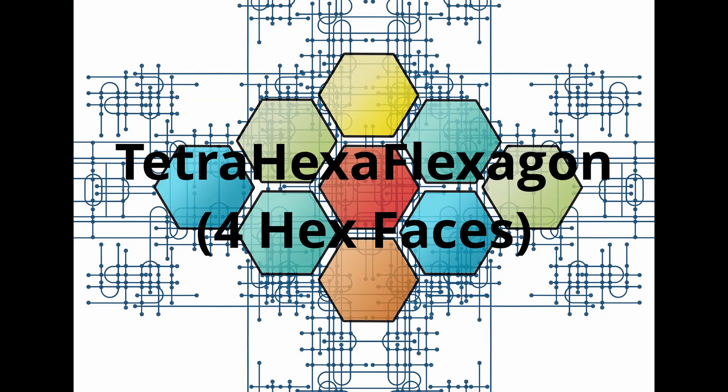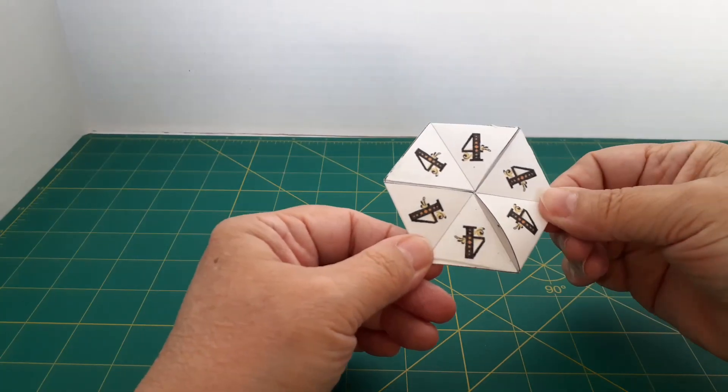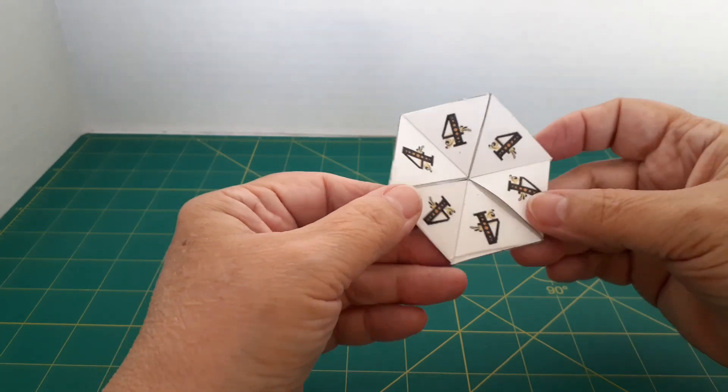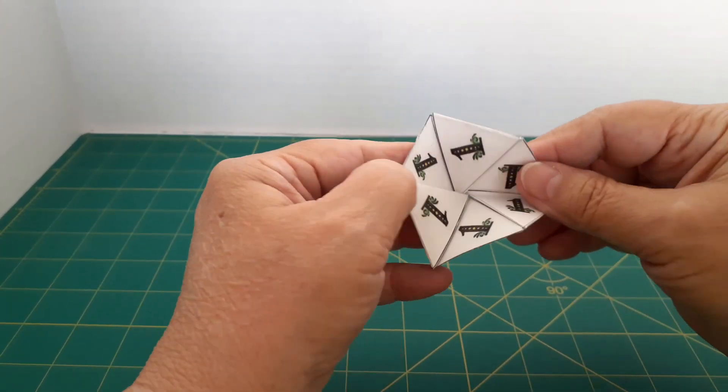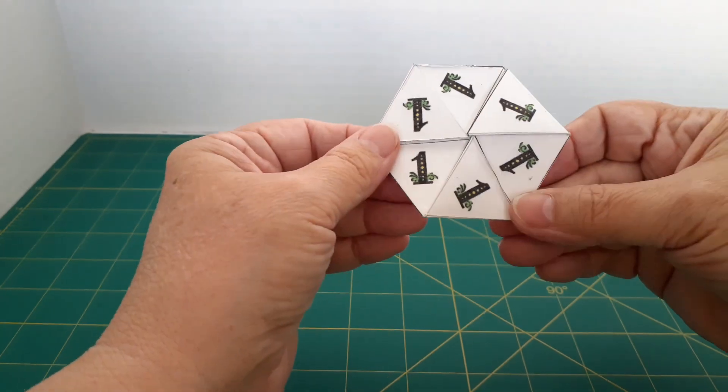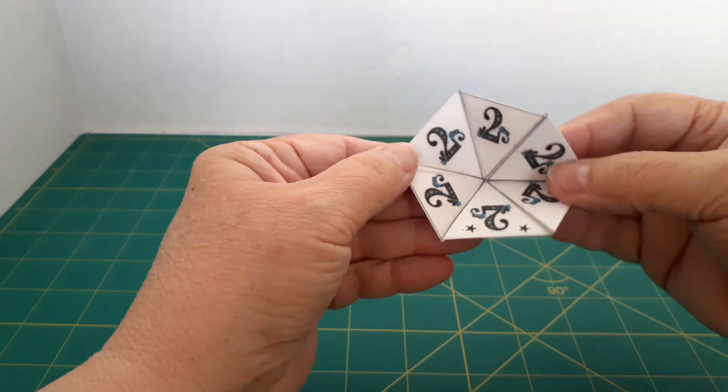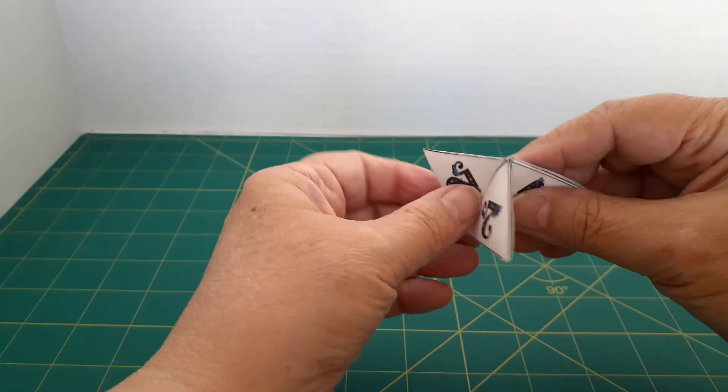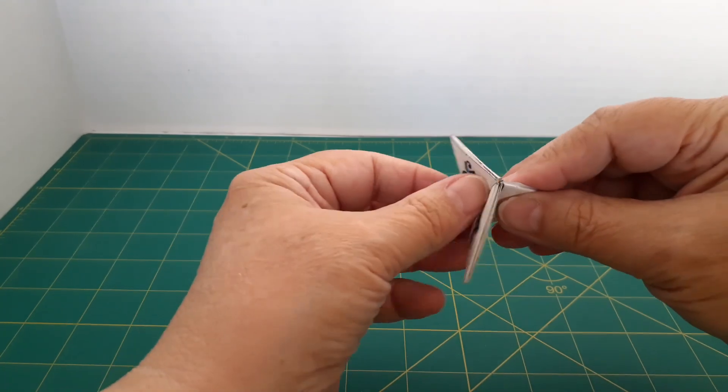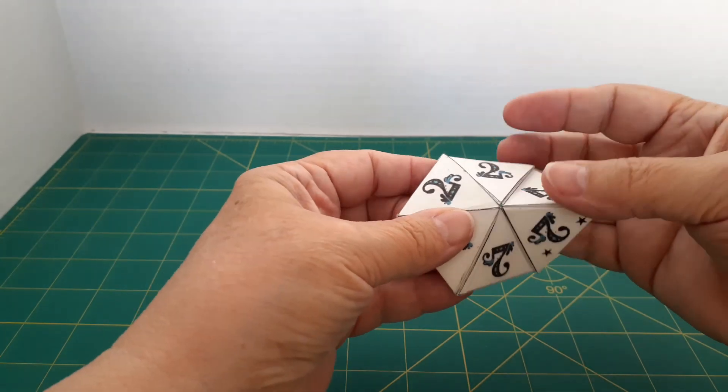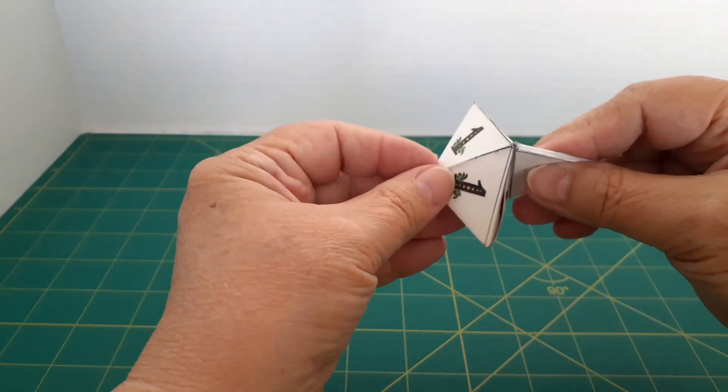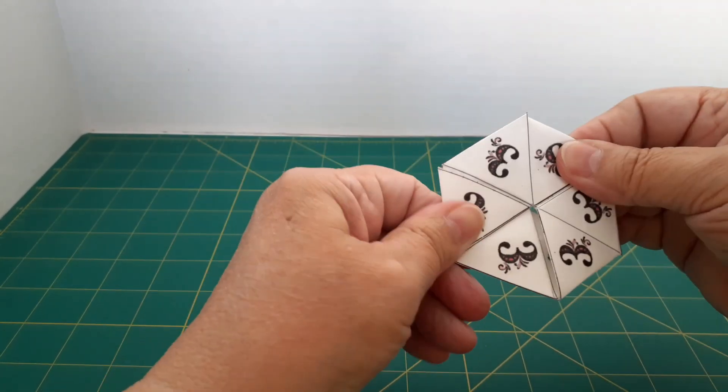Now tetra hexaflexagons have four hexagonal faces. So here you see me playing with one that has just the numbers one through four. Sometimes the numbers are face up like those twos were around the center and like the fours. Other times they're sort of rotated, like the ones are now, like the threes. But it's pretty cool.